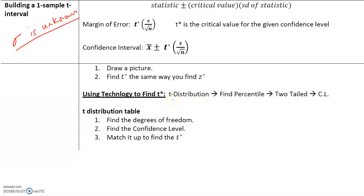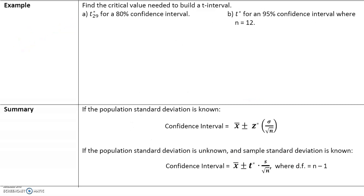Instead of clicking the normal distribution in the calculator, we will click on the t-distribution, find percentile, two-tailed, and then put in the confidence level. I'll walk you through this step.